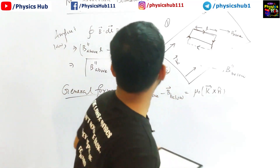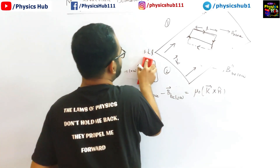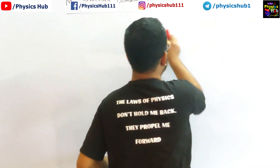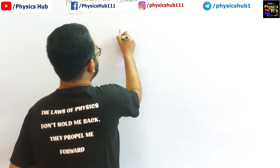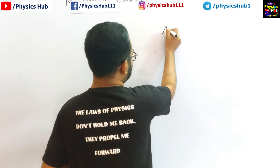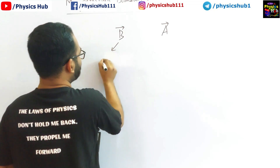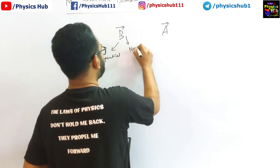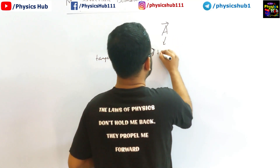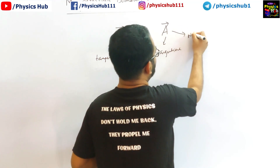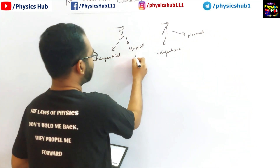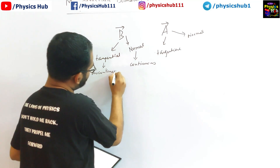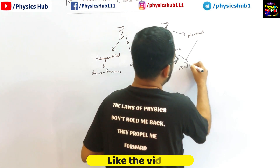Let's summarize everything. We have two vectors: magnetic field B and magnetic vector potential A. Each has a tangential (parallel) component and a normal (perpendicular) component. For B: the normal component is continuous, while the tangential component is discontinuous. For A: both the normal and tangential components are continuous across the boundary.